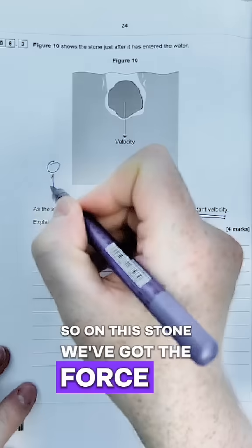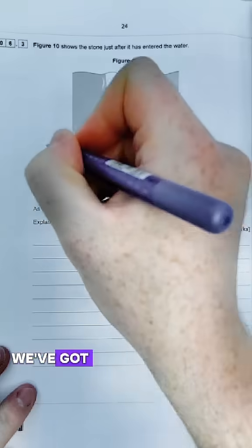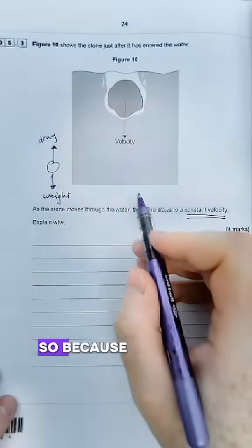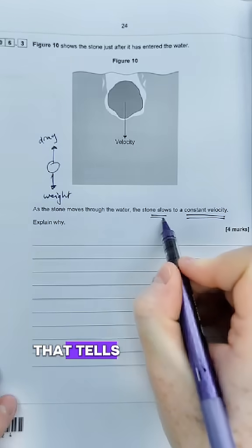On this stone we've got the force of its weight going downwards, and upwards we've got not air resistance because in the air we just call it drag basically. Because this stone is slowing down, that tells us another thing about the forces.